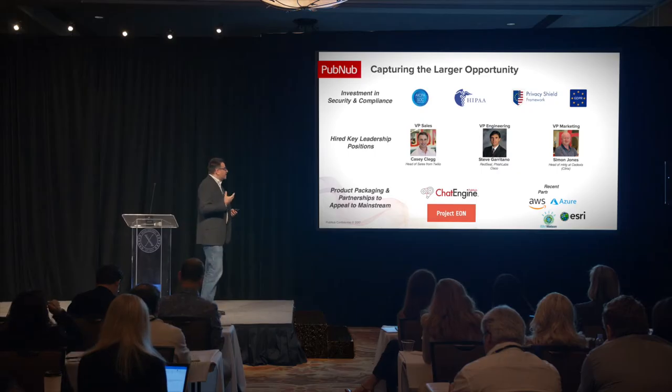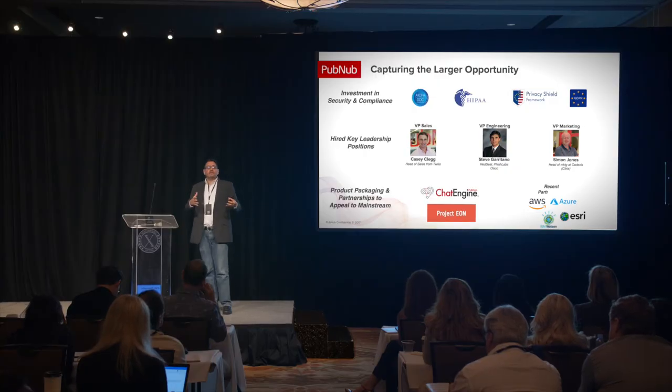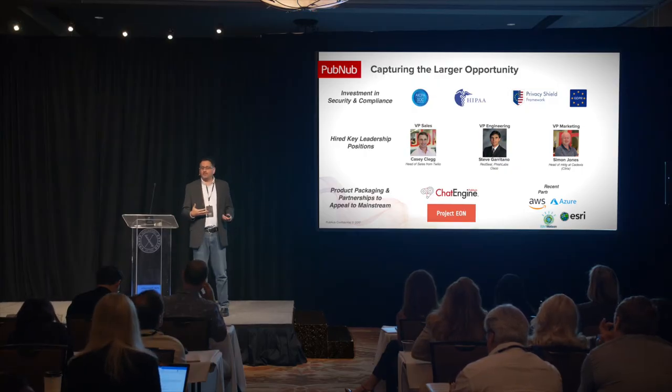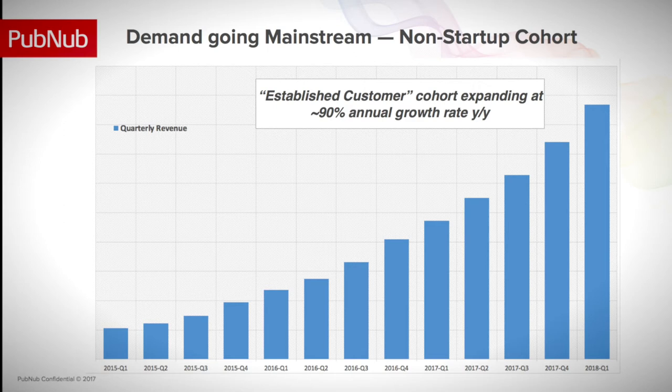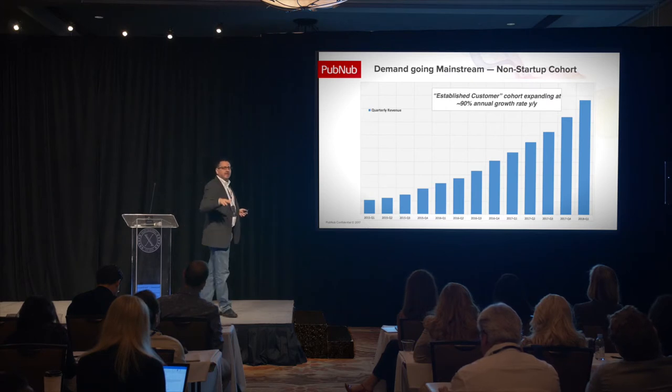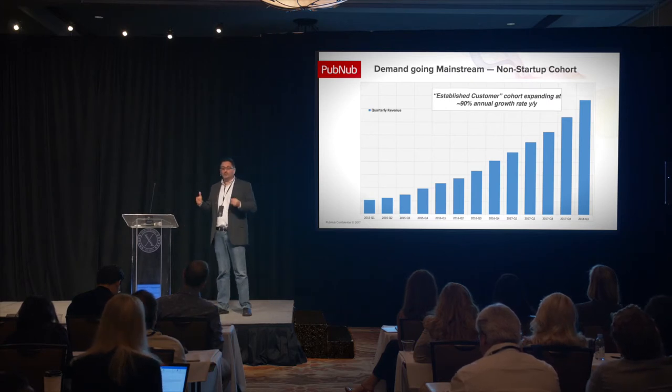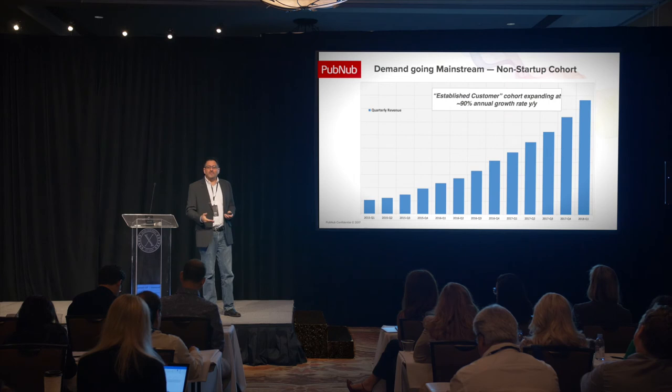So we made a lot of investment on the technology side to ensure compliance with HIPAA, GDPR, and SOC. We hired Twilio's head of sales — a pioneer in a different selling model — and up-leveled aspects of the team. We launched components like Chat Engine and Project Deon for real-time graphing, making it easier for mainstream companies to put these paradigms into their applications. That's been working out really well. The cohort of established or mainstream companies — recently IPO'd or those with strong business models — is growing at about 90% a year, and now roughly 60% of our revenue comes from big mainstream businesses.